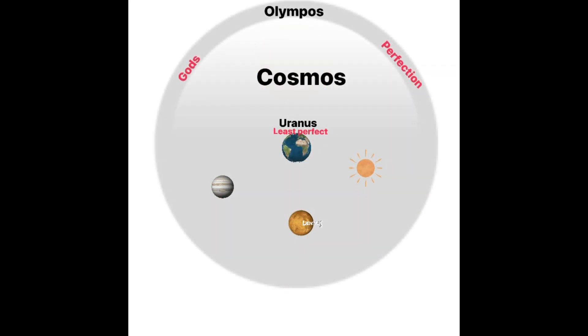So in the heavens that were so perfect, every motion had to be perfectly circular, because a circle was this ideal geometrical shape. Also, the objects or the planets had to be perfectly spherical.